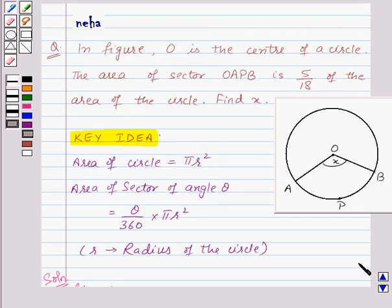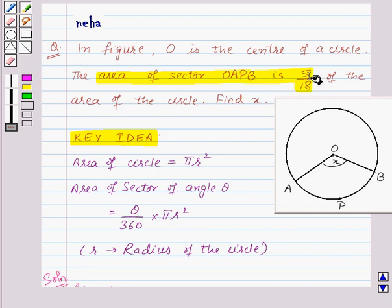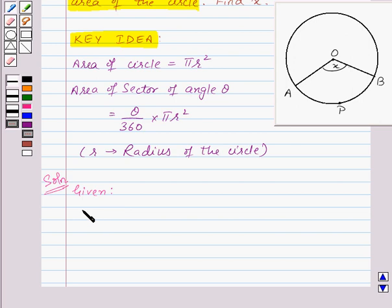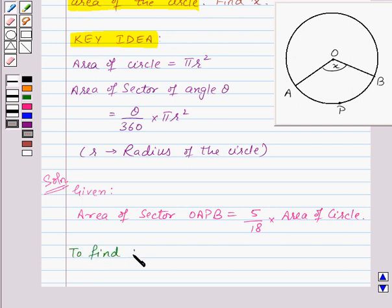We are given that the area of sector OAPB is 5/18 of the area of the circle. So we have: Area of sector OAPB = (5/18) × Area of circle. We need to find the value of x.